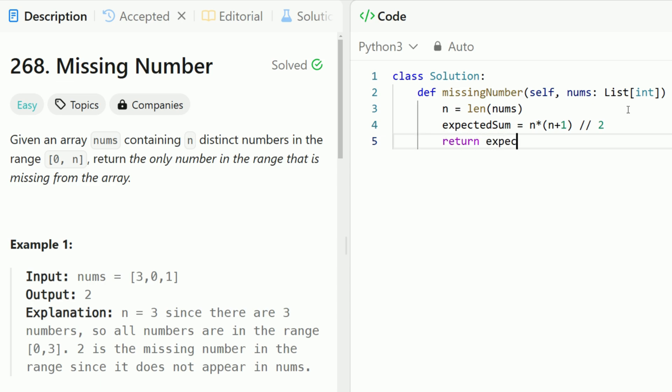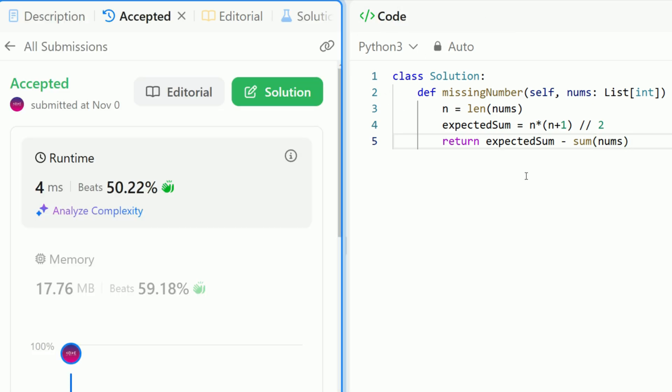And now we return back the expected sum minus sum of nums. Let's run this and it succeeds. I like the solution much better since it's shorter to write out and it's truly easier to understand.